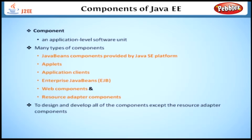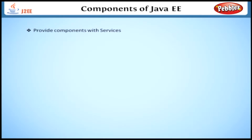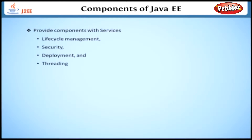All of the Java EE components depend on the runtime support of a system-level entity called a container. Containers provide components with services such as lifecycle management, security, deployment, and threading. We will discuss about the container and its various types in the upcoming lessons. Now we will see the various components in the Java EE platform.